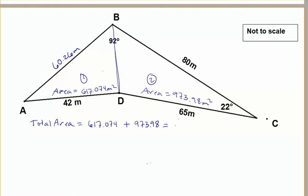When we add those two together, we get 1591.05 meters squared. And I'm going to round this to 1591 meters squared.